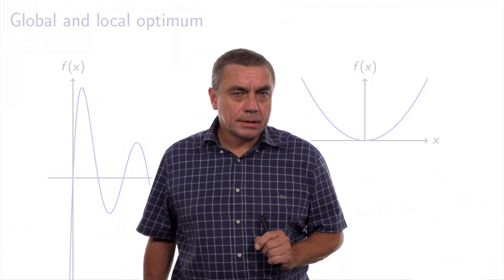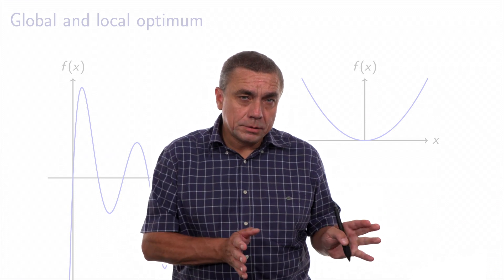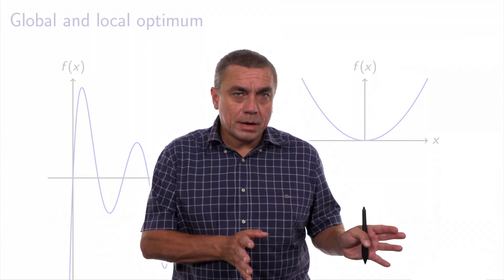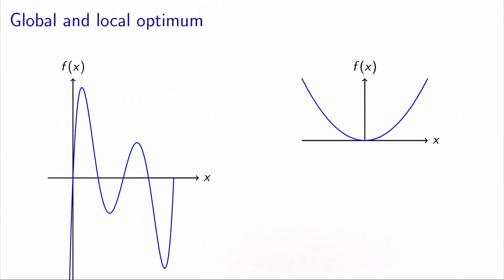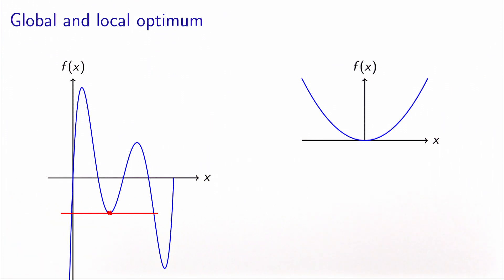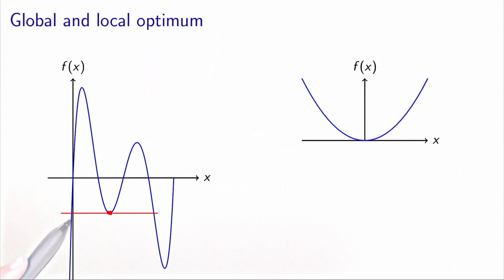It is important to keep in mind that these conditions apply to local optima — they don't say anything about global optima. Looking at the example on the left of this slide, this point is a local optimum: the gradient (slope of the tangent) is zero, and the second derivative (curvature of the function at that point) is positive — the function is convex at that point, so the sufficient conditions are verified. But this point is a local optimum, not a global optimum, because the function reaches values below it elsewhere.